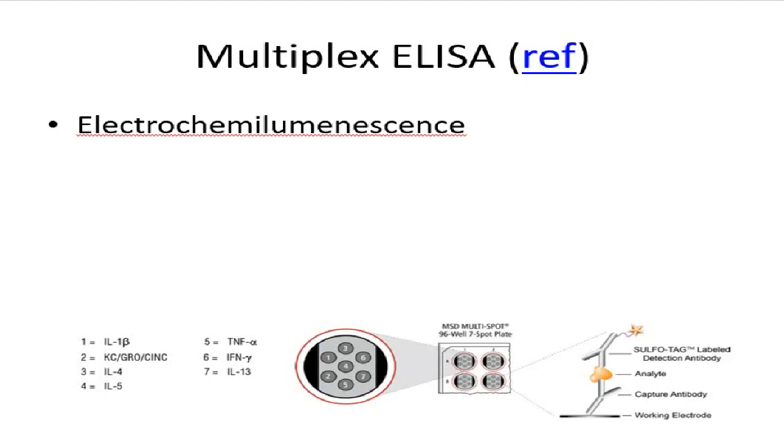Essentially within each well of the plate of this platform, you'll have a number of different regions that will detect different analytes. So within each well there are, in this case, nine or eight different small subsections of that well that are dedicated to looking at individual analytes.